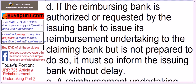Part D is similar to the UCP provisions where an advising bank is not ready to advise, or a confirming bank is not ready to confirm. Similarly here, if the reimbursing bank is authorized or requested by the issuing bank to issue its Reimbursement Undertaking (RU) to the claiming bank but is not prepared to do so, it must inform the issuing bank without delay. The same applies under the RA: if the issuing bank instructs under the RA to honor the claim and the reimbursing bank is not ready, it must immediately inform the issuing bank.